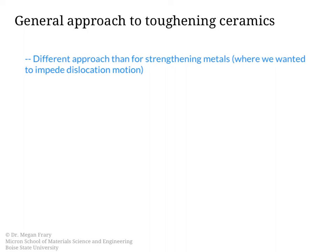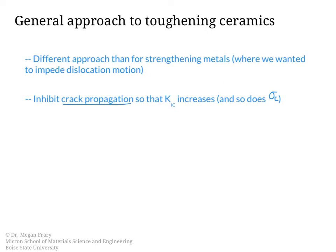In metals, the main approach was to impede dislocation motion, which increased their strength. For ceramics, there is a different approach. Instead, for ceramics, what we want to do is to inhibit crack propagation so that effectively K1c, the fracture toughness, goes up, and ultimately so does the critical stress for failure. The general strategy for doing this is to use methods that require more energy for the crack to propagate, which increases the fracture toughness. Essentially, the energy that would have gone into growing the crack is being used up through different mechanisms, and that's the way that ceramics get toughened.